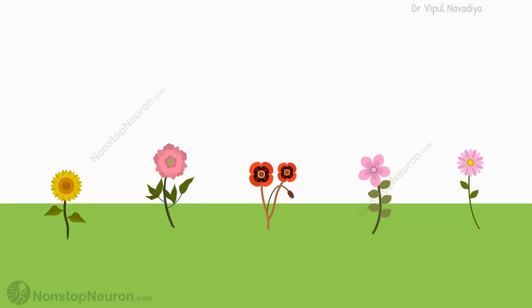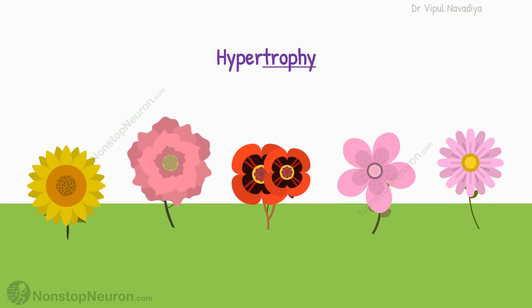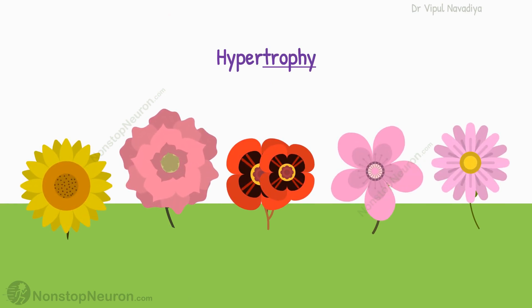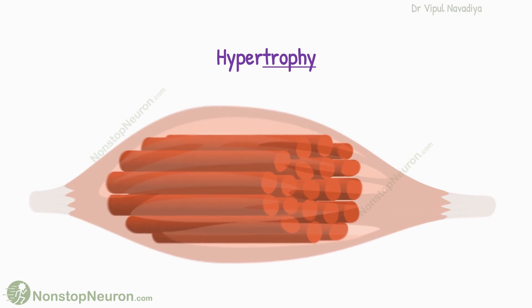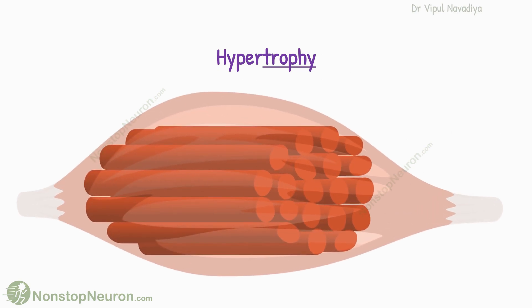Imagine you have a garden with flowers in it. Hypertrophy is like your flowers growing bigger — when you provide them with plenty of water, sunlight, and fertilizer, the flowers start to get larger and more robust. Similarly, in muscle hypertrophy, when you engage in regular strength training or exercise, your muscles receive nutrients and the muscle fibers grow larger and stronger.